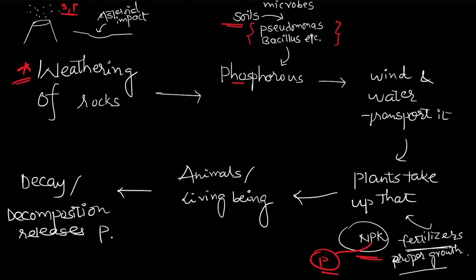These are the different resources through which plants take up phosphorus. When animals or living beings feed on the plants, the phosphorus reaches them as well. Upon the decay and decomposition of those organisms, the release of phosphorus takes place. This is how the biogeochemical cycle of phosphorus proceeds.